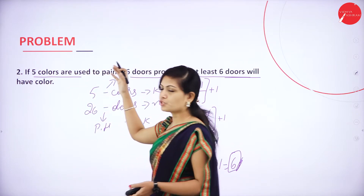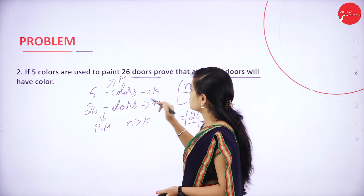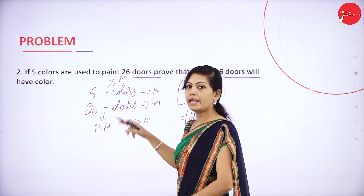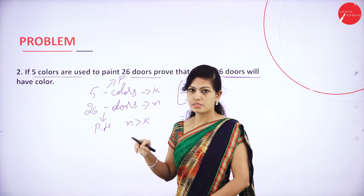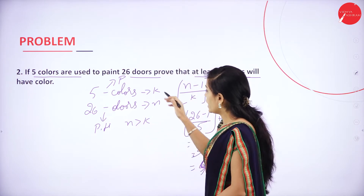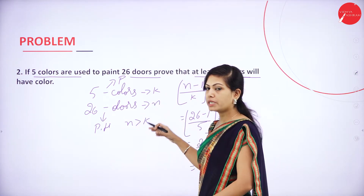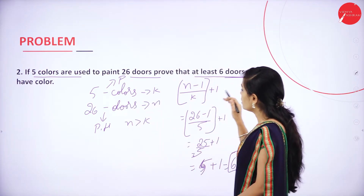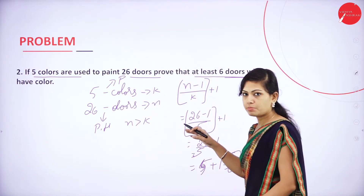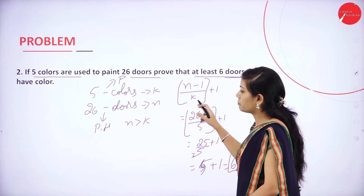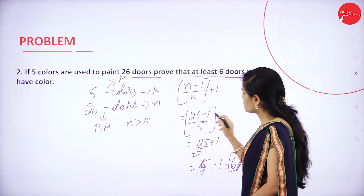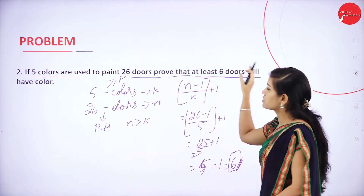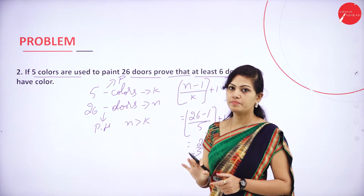If 5 colors are used to paint 26 doors, the 26 doors are the pigeon holes and the 5 colors are the pigeons. So n is greater than k, meaning the number of objects is greater than the number of positions. Then we can apply the generalized principle: n minus 1 by k plus 1. Substituting the values, we get 6. So we have proved that at least 6 doors will have the same color.